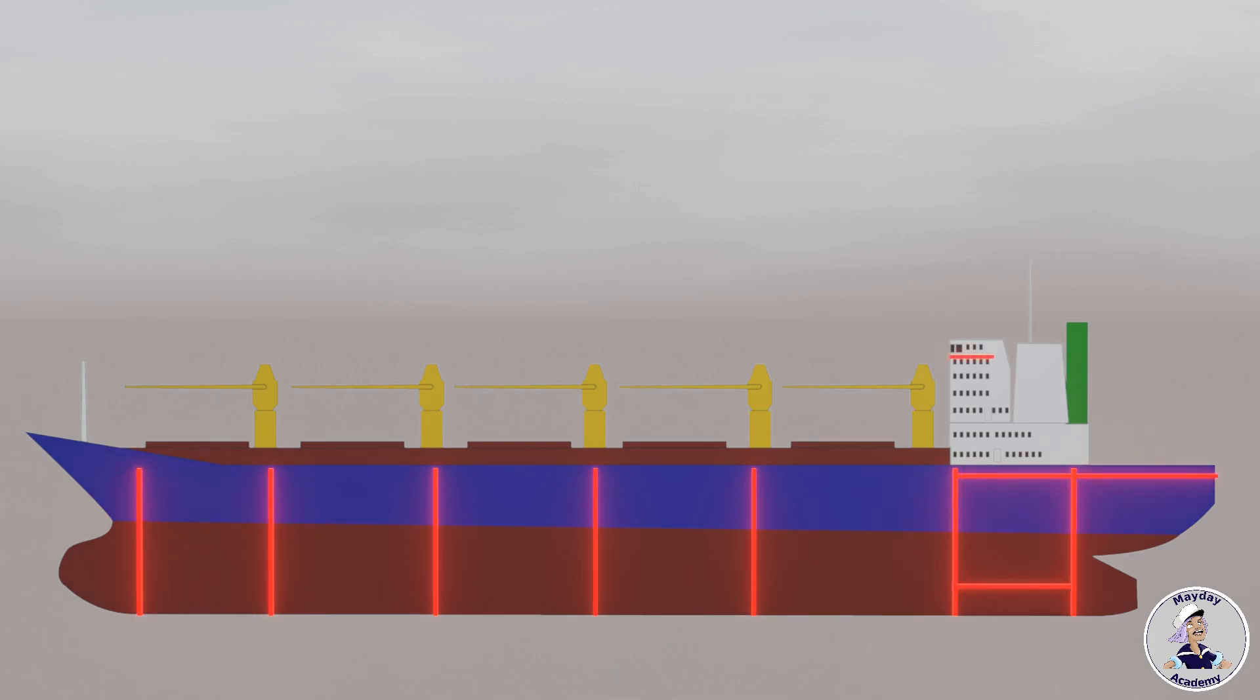However, during normal operation, ventilation ducts are essential for maintaining a comfortable environment. Fire flaps and dampers are strategically placed in ventilation systems and bulkheads to prevent fire and smoke spread.